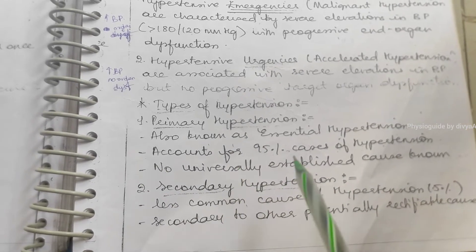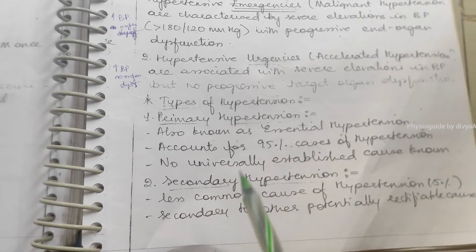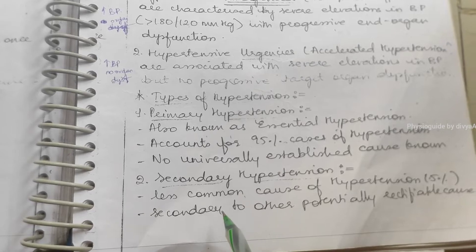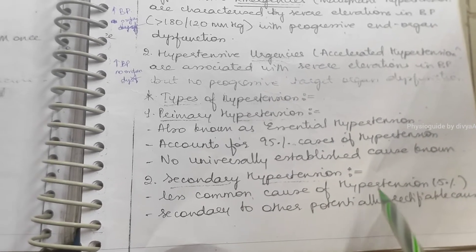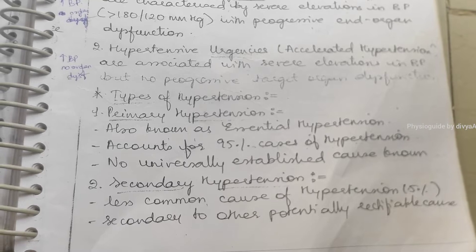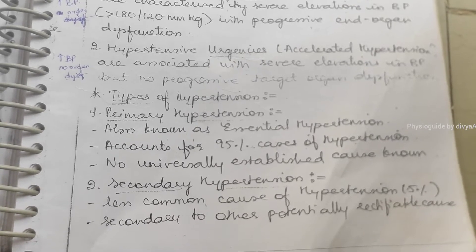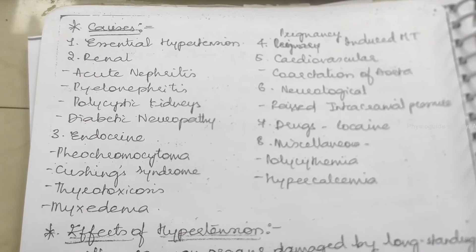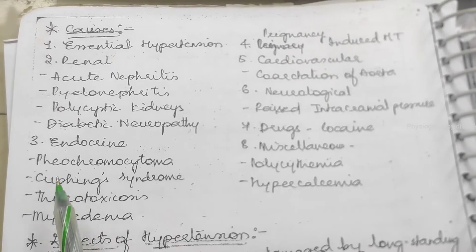Secondary is a less common cause of hypertension, secondary to other potential rectifiable causes. Now what are the causes of hypertension? Why does this hypertension occur?